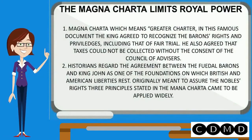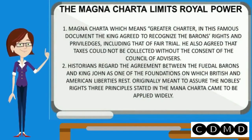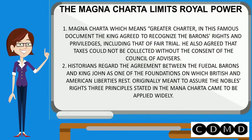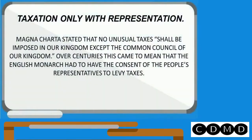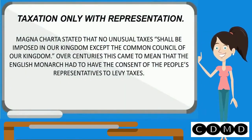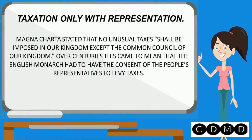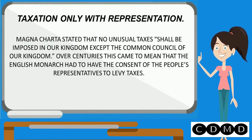The Magna Carta limits royal power. Magna Carta, which means Greater Charter, was a famous document in which the king agreed to recognize the barons' rights and privileges, including that of a fair trial. He also agreed that taxes could not be collected without the consent of a council of advisors. Magna Carta stated that no unusual taxes shall be imposed except by the common council of the kingdom. Over centuries, this came to mean that the English monarch had to have the consent of the people's representatives to levy taxes.